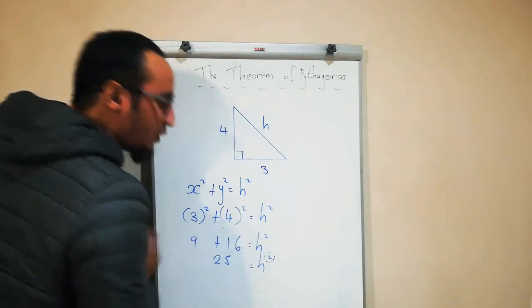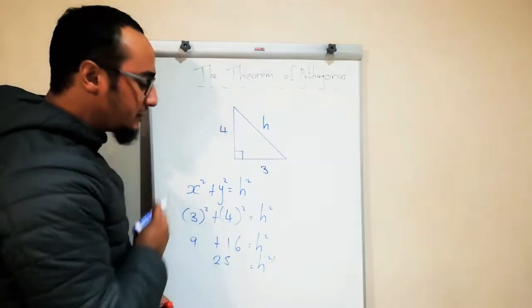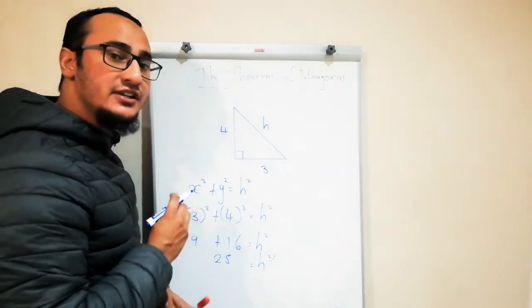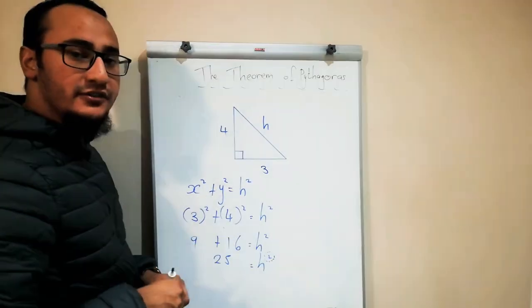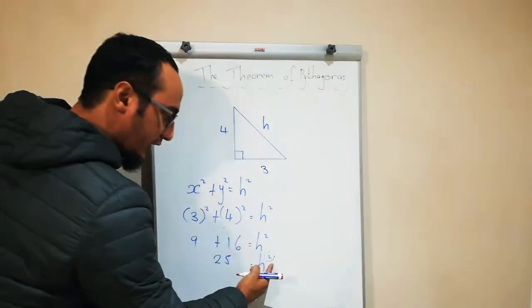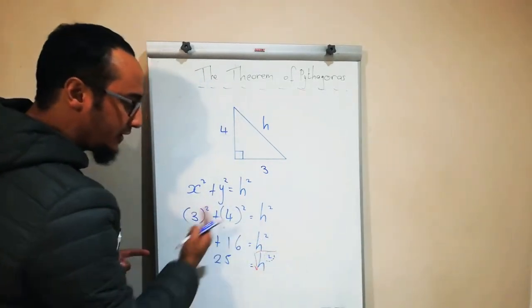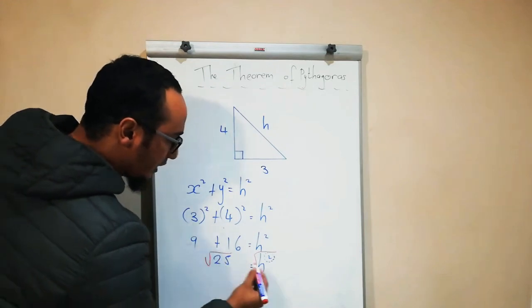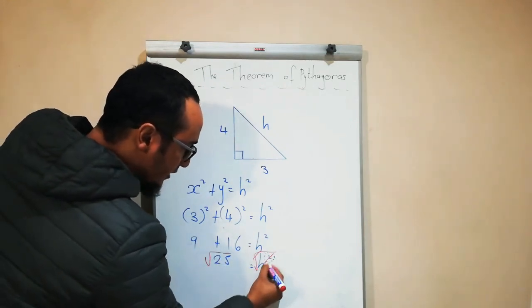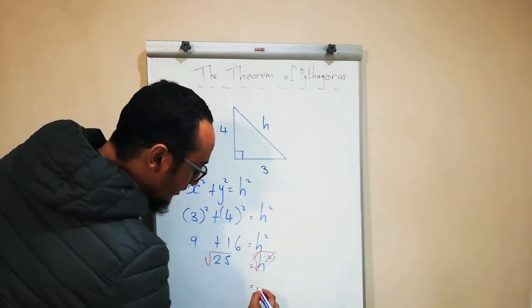Now I need to calculate h, meaning I need to get rid of this square. When I get rid of something in mathematics, I use the inverse operation, and the inverse operation of a square is a square root. What I do on my right hand side, I do on my left hand side.